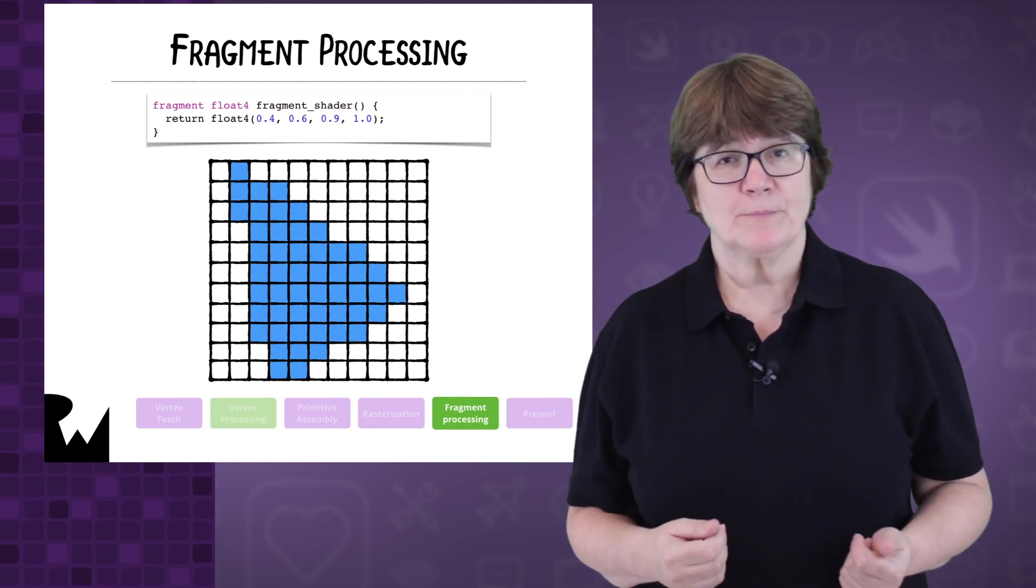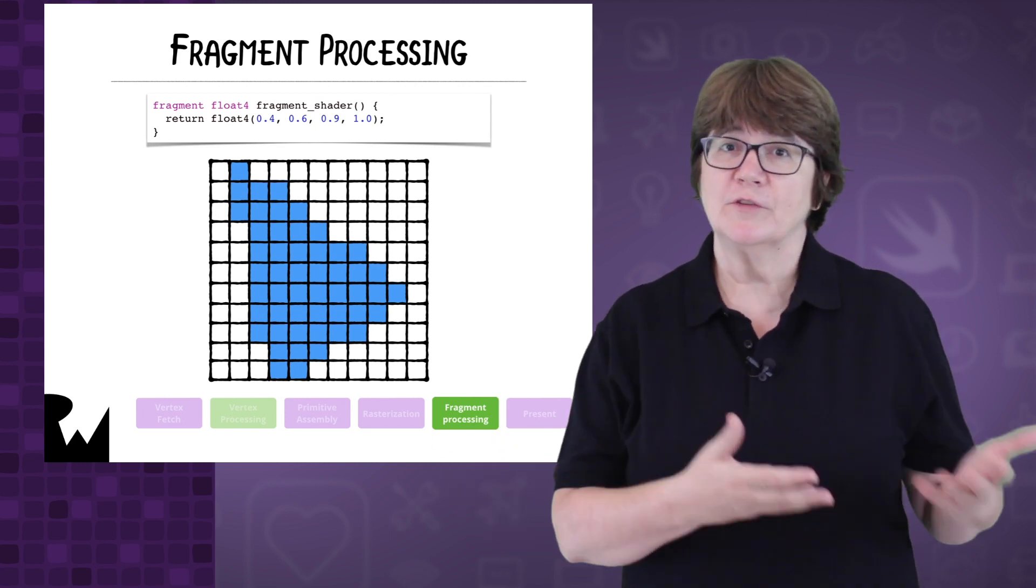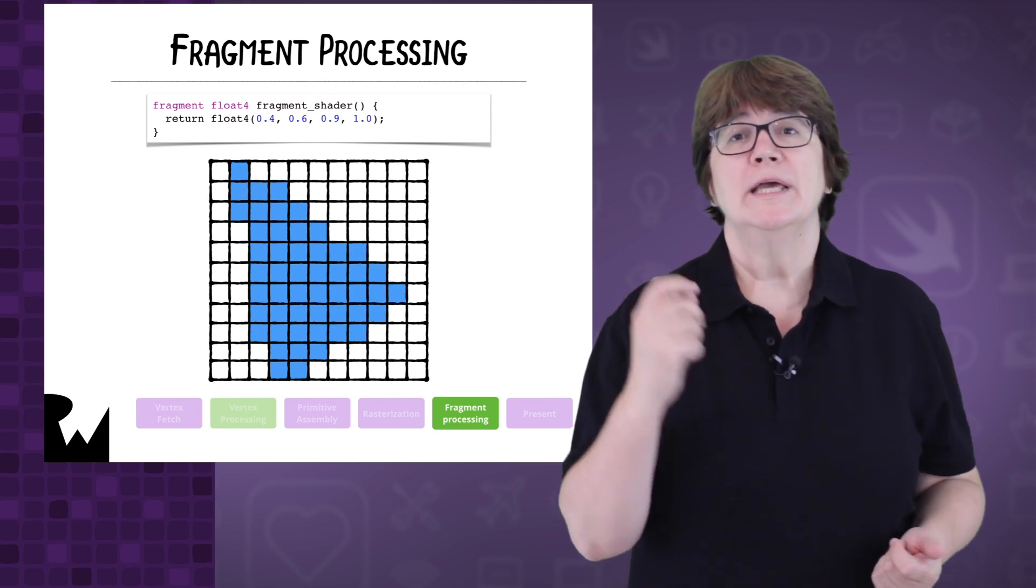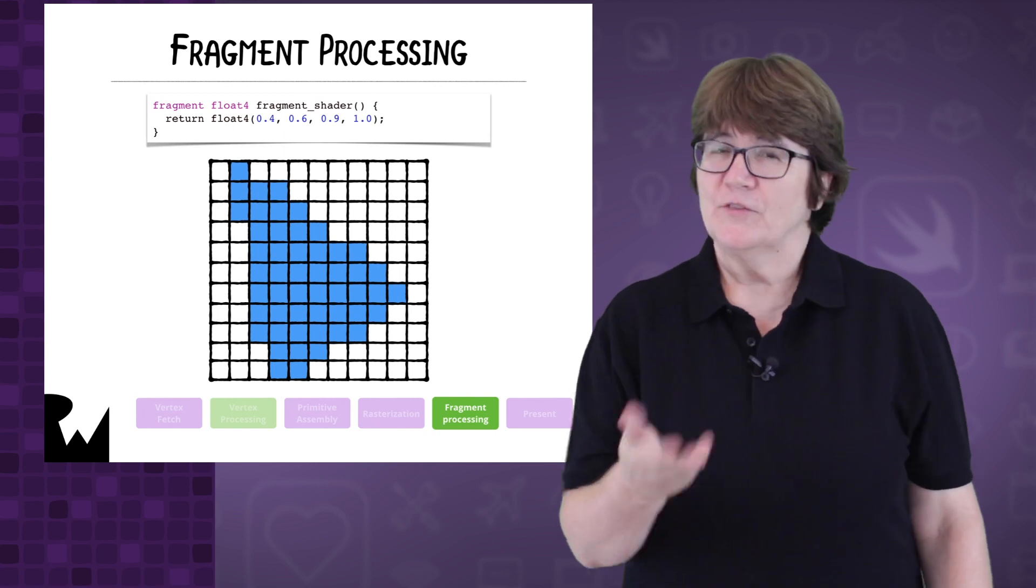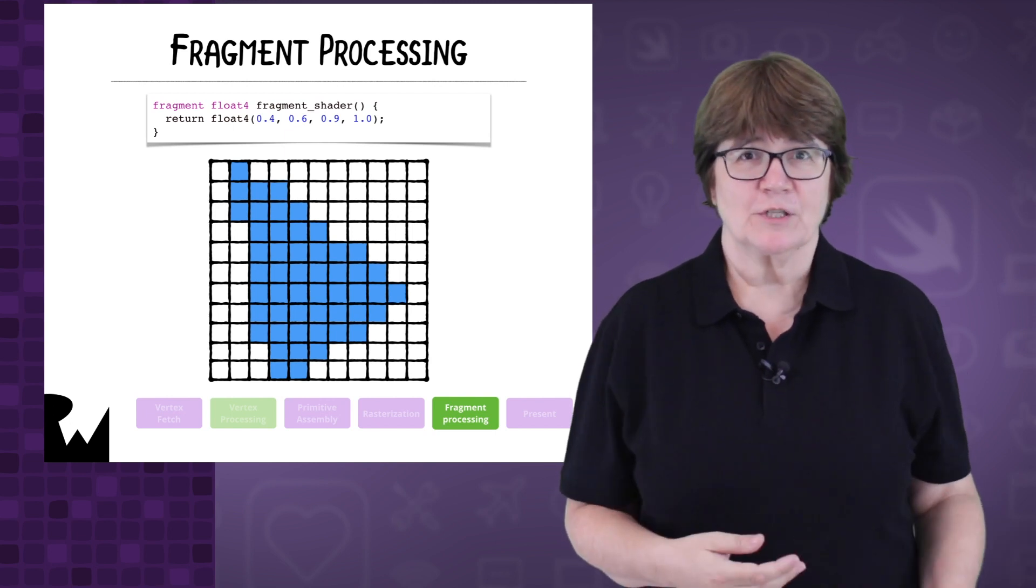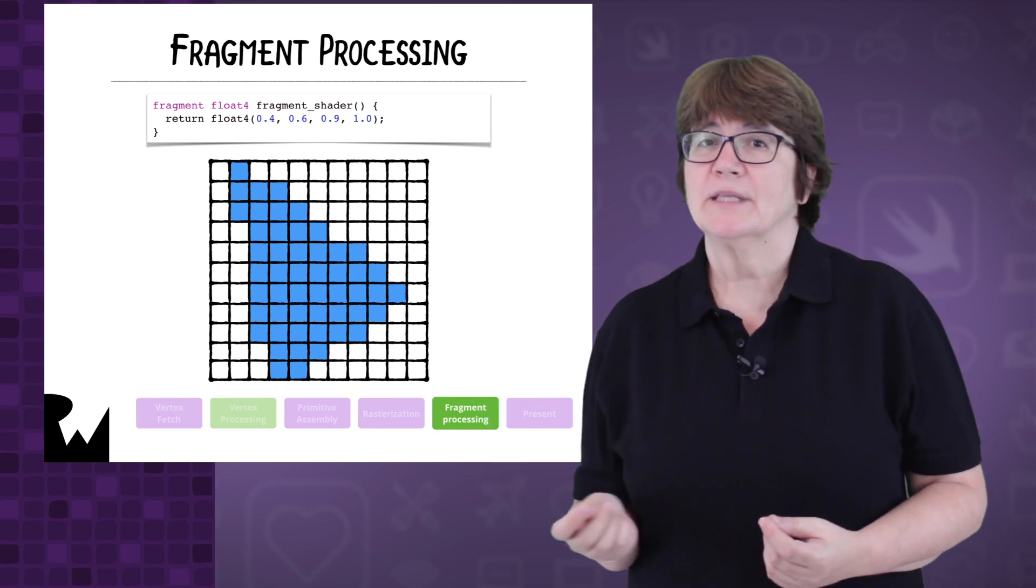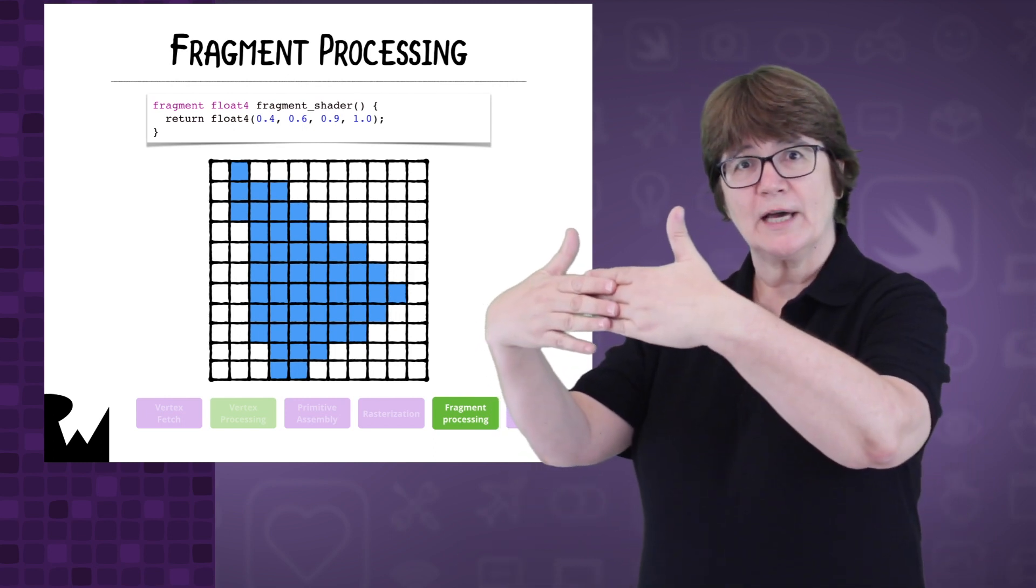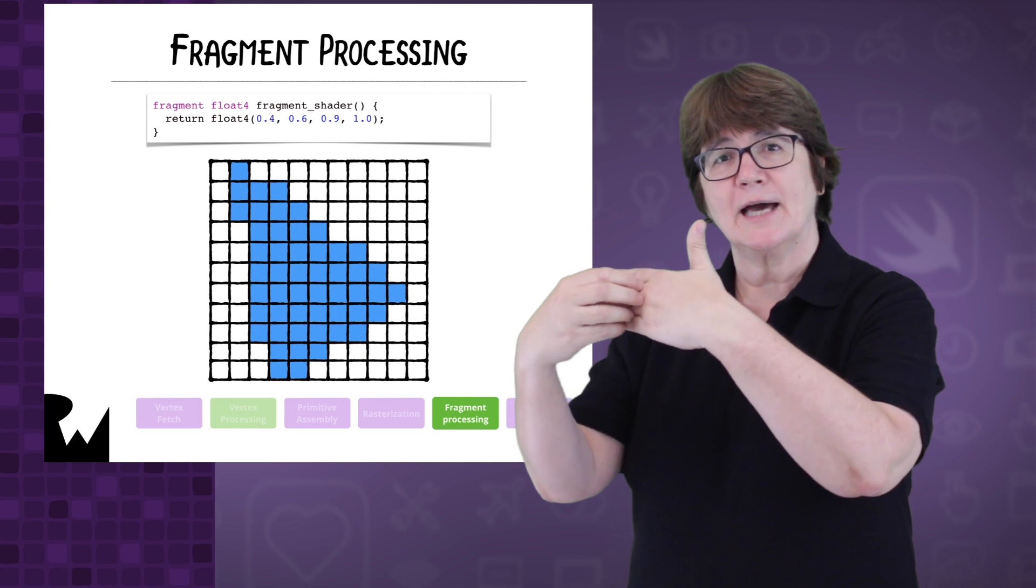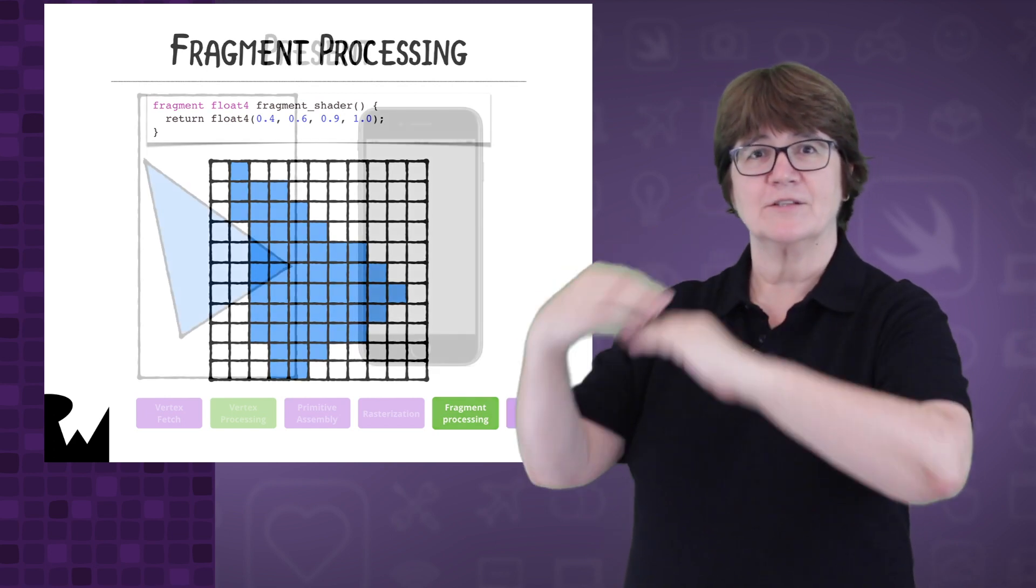And all we have to do now is give each fragment its final color. This is another programmable stage. The fragment function returns this blue color as a float 4 in RGBA. That's red, green, blue, alpha format. This is a very simple fragment function, but it's here so that we can calculate 3D lighting. If a fragment is facing towards a light, then we should return a lighter color than a fragment facing away from a light.